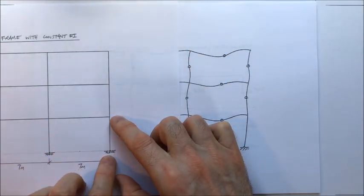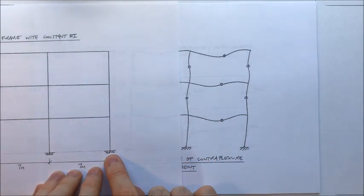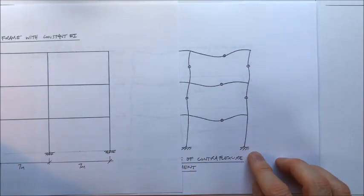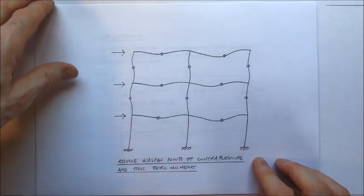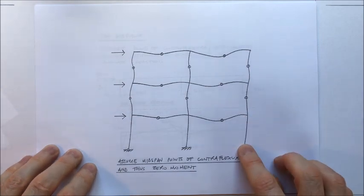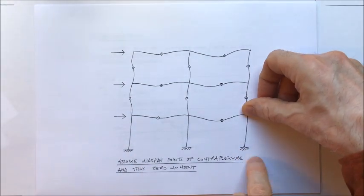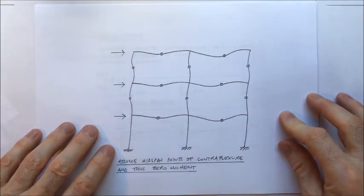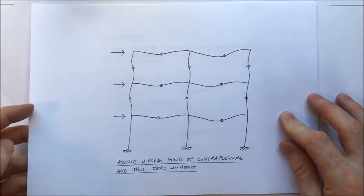However, at the bottom we have single columns with a single pin at the base, and they don't develop any contra-flexure or bending. They are just a vertical cantilever fixed at the top, pinned at the bottom, with a horizontal reaction applied at their bases.